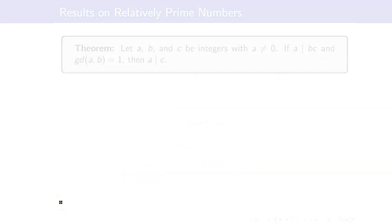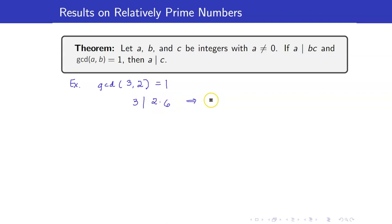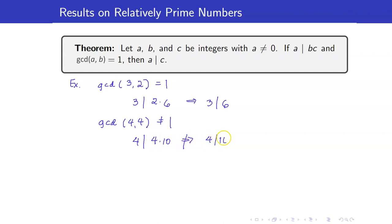I will end with two big theorems on relatively prime numbers. First: suppose a, b, and c are integers with a non-zero. If a divides bc and gcd(a, b) = 1, then a divides c. To illustrate: take a = 3 and b = 2. Three divides 12 = 2·6, and 3 divides 6. However, if the GCD is not 1 — for example, a = b = 4 — then 4 divides 40 = 4·10, but 4 does not divide 10.